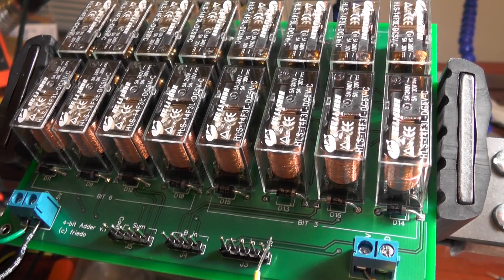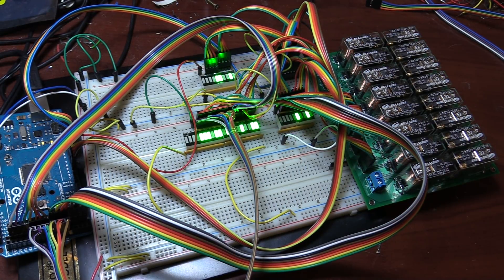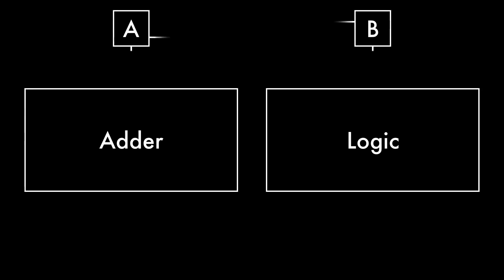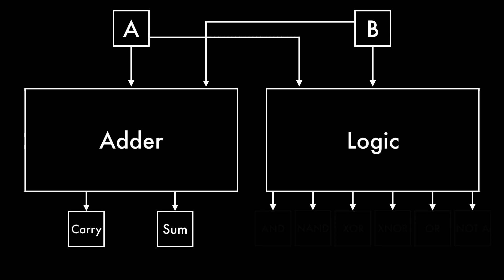In the previous videos, I designed and built my computer's adder and logic block. Both of those systems take two binary numbers as inputs and generate several outputs. The adder generates a sum, and the logic block generates six logic functions.